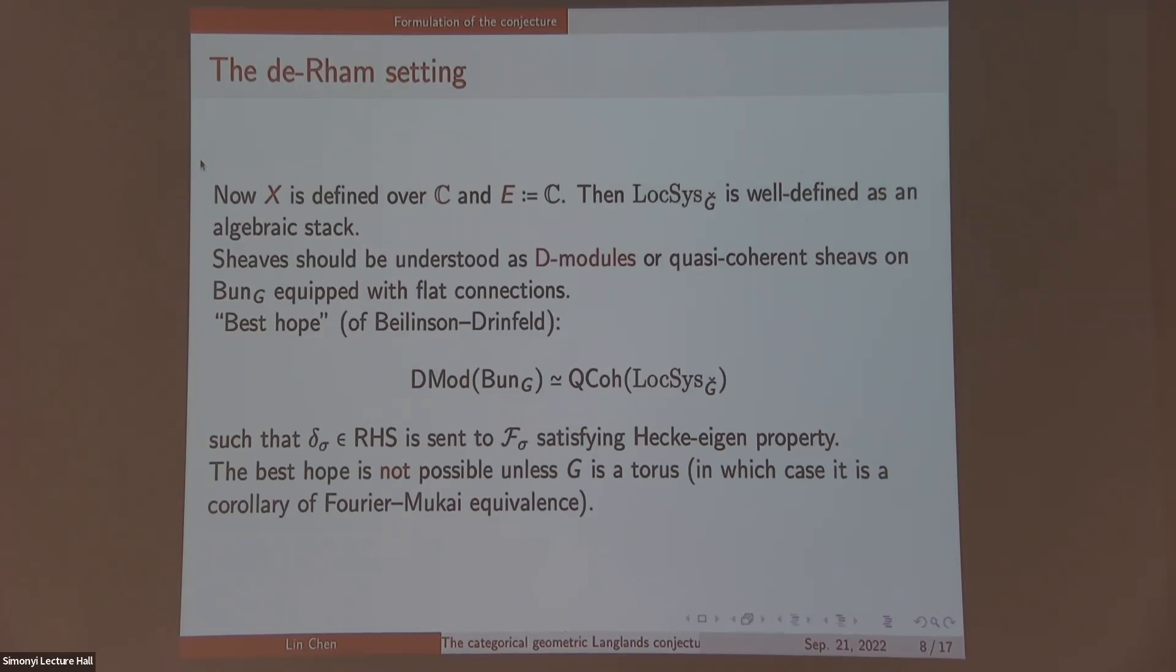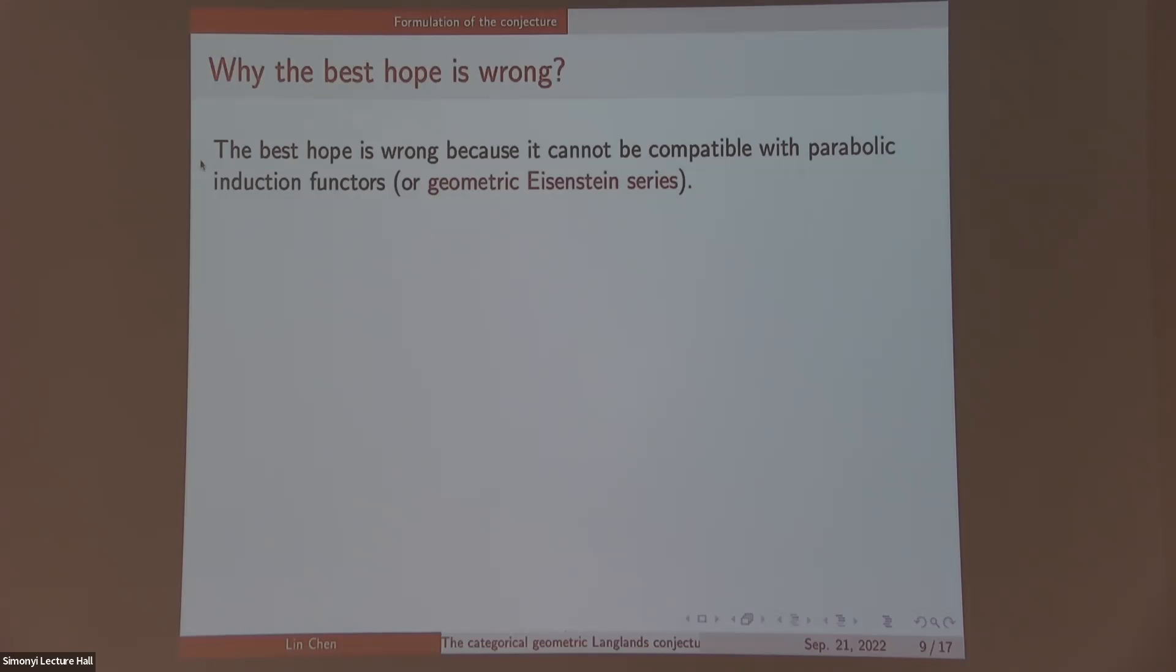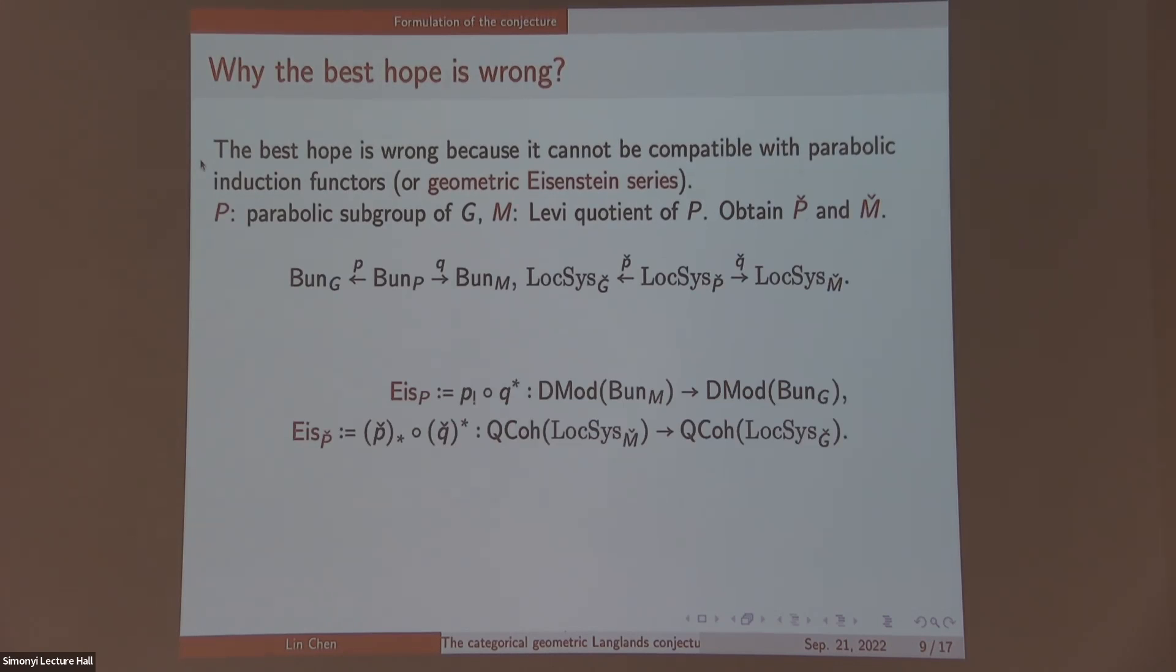However, when G is not the torus, it's impossible because such an equivalence would not be compatible with parabolic induction functors or known as geometric Eisenstein series functors. Let me introduce them. It says the following. Let P be a parabolic subgroup of G and M being its Levi quotient. You can see the corresponding P-check and M-check. Then you can consider two functors. The first is star pullback on this arm and shriek pushforward on this arm for D-modules. The other is just quasi-coherent sheaf pullback and pushforward.